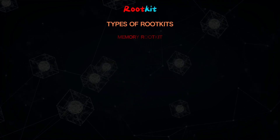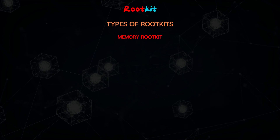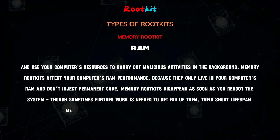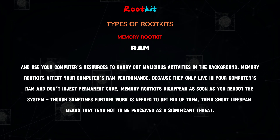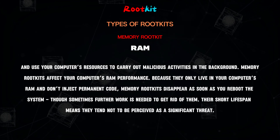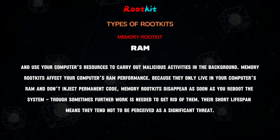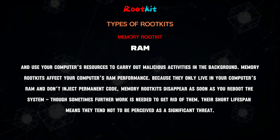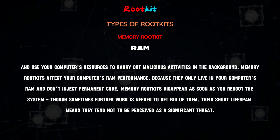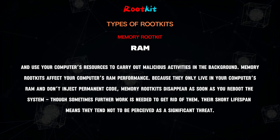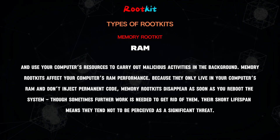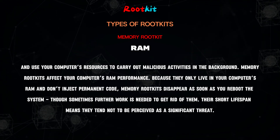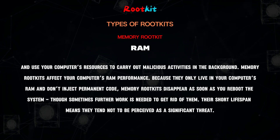Memory rootkits hide in your computer's random access memory (RAM) and use your computer's resources to carry out malicious activities in the background. Memory rootkits affect your computer's RAM performance. Because they only live in your computer's RAM and don't inject permanent code, memory rootkits disappear as soon as you reboot the system, though sometimes further work is needed to get rid of them. Their short lifespan means they tend not to be perceived as a significant threat.